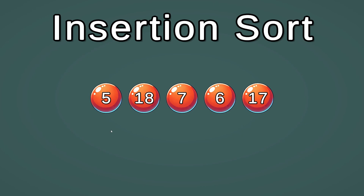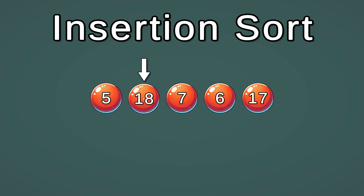Insertion sort algorithm works by starting at position 2. We take a look at this number and compare it with the previous one. And if they are in order — which they are, 5 is less than 18 — we continue to the next position.